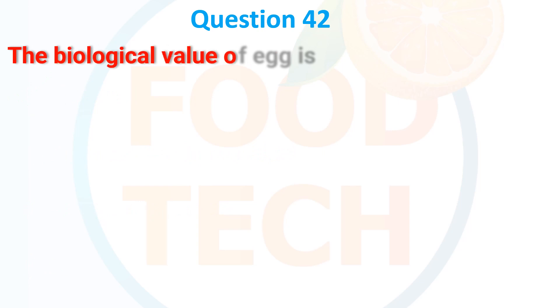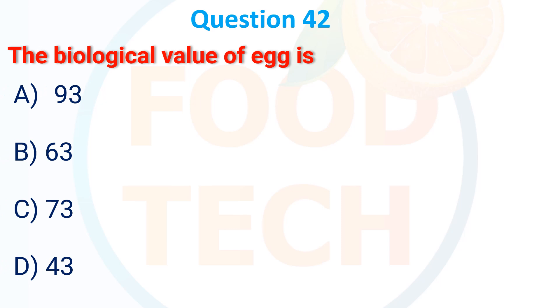Question 42. The biological value of egg is: A. 93. B. 63. C. 73. D. 43. The correct answer is A: 93.